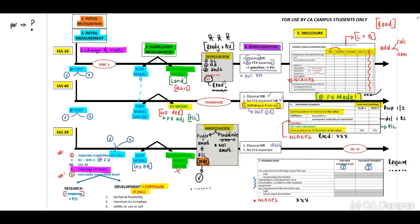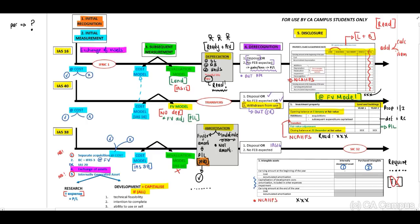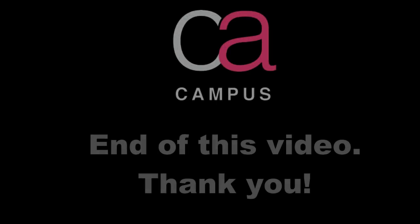When you look at your tutorial letters and self-assessment questions, you will notice that they do not normally include the narrative information. The one exception is an IAS 8 change in estimate. The assumption is that you do not have to include narrative information unless the requirement specifically asks for it. Please read the requirements carefully to determine whether narrative information should be included.